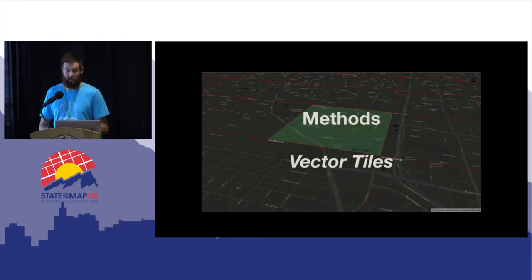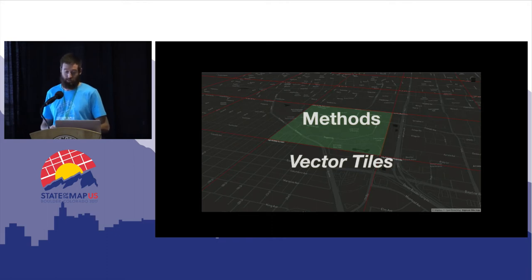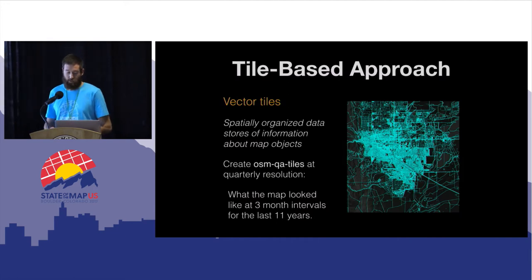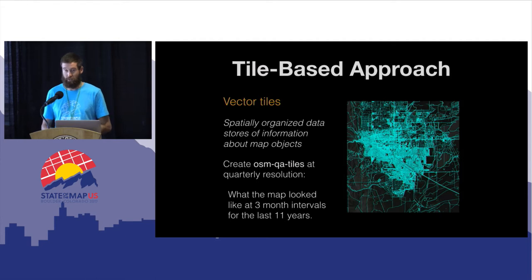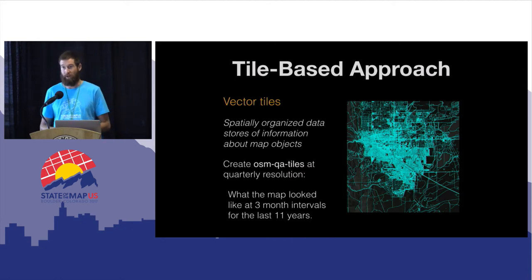These assessments are all based on vector tiles. This allows us to use the Tile Reduce framework for efficient parallel processing of the map data. Tile Reduce is an open source map-reduce framework based on vector tiles. First we turn OSM data into vector tiles, creating a global tile set rendered at zoom level 12 of the entire OSM database. This is the same process that generates the daily OSM quality assurance tiles, containing about two and a half million tiles for the whole world.